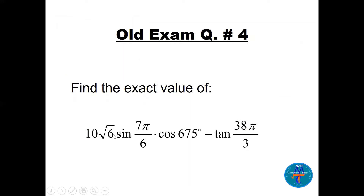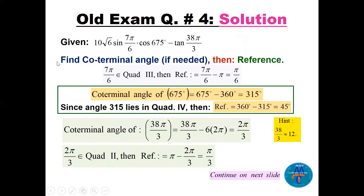Question 4: find the exact value of 10√6 · sin(7π/6) · cos(675°) − tan(38π/3). We need three values: sin(7π/6), cos(675°), and tan(38π/3). For sin(7π/6): 7π/6 lies in quadrant 3, so no co-terminal needed; the reference angle is 7π/6 − π = π/6. For cos(675°): subtract 360° to get 315°, which is in quadrant 4; reference angle = 360° − 315° = 45°.